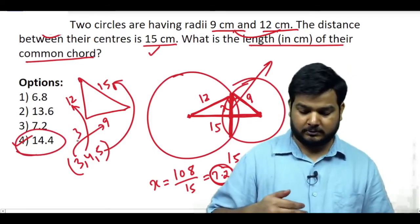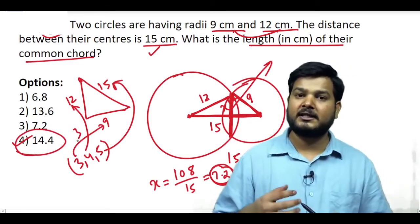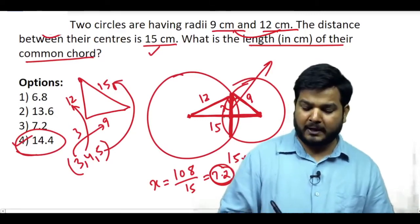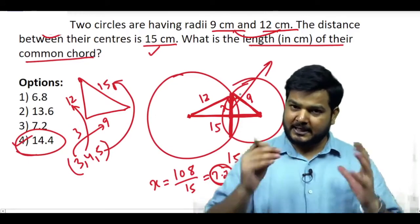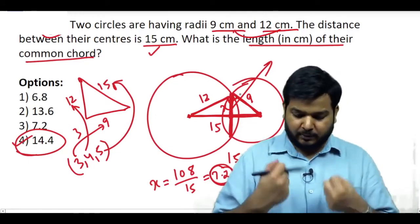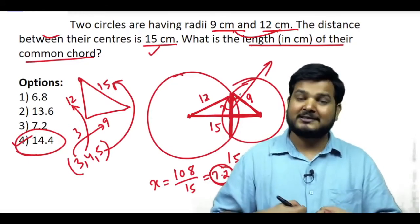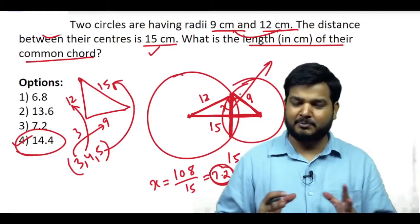It was a very easy question. But it was the most important to understand that this 9, 12, 15 is a Pythagorean triplet, so this is 90 degree. This was the crux of this question, that the knowledge of the Pythagorean triplet will give you the answer directly, otherwise you will waste unnecessary time.